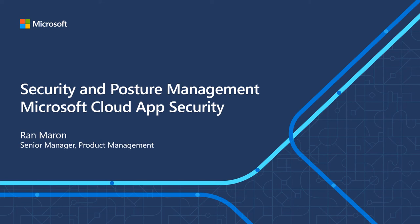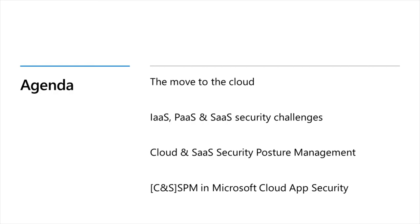Hi everyone, I'm Ron from Microsoft Cloud App Security. In this session we'll talk about cloud and SaaS security posture management, or in short CSPM and SSPM. I will start by reminding us that companies are moving to the cloud fast, then present the security challenges due to IaaS, PaaS, and SaaS usage, explain what CSPM and SSPM are, and finish with a demo of what we do at Microsoft Cloud App Security.